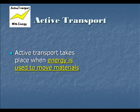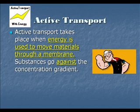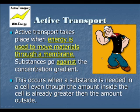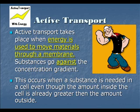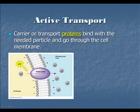Active transport is a little different. Active transport takes place when energy is used to move materials through a membrane. This is when substances go against a concentration gradient, so it requires energy. This occurs when a substance is needed in the cell, even though the amount already in the cell is at a higher concentration than outside the cell. The example from your book was nutrients moving into the roots of plants. This requires a carrier or transport protein to bind with the needed particle to move it through the cell membrane, and again, it requires energy.